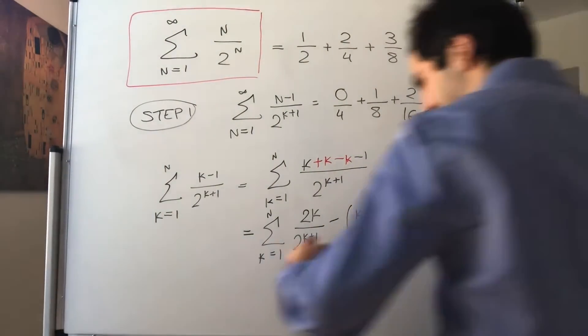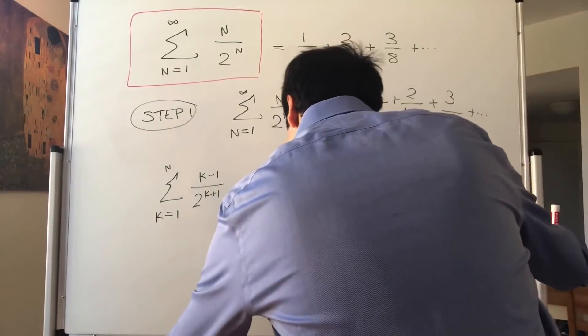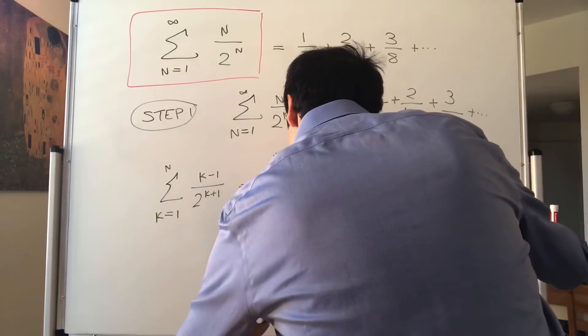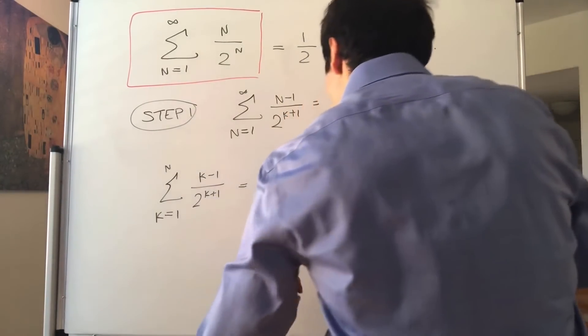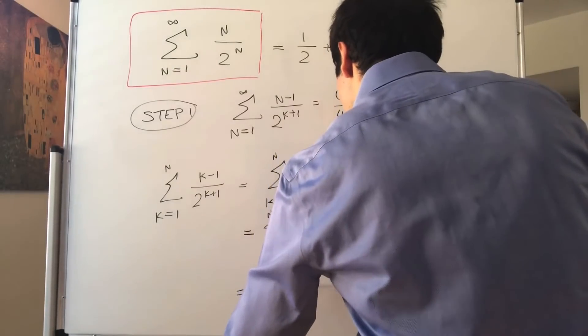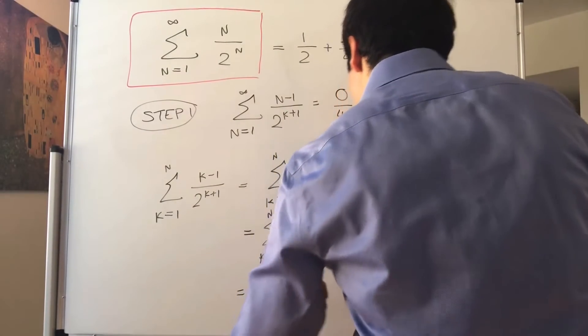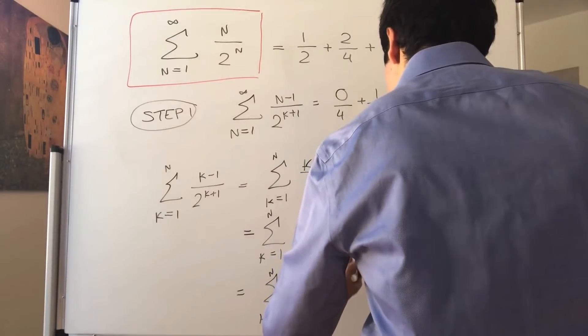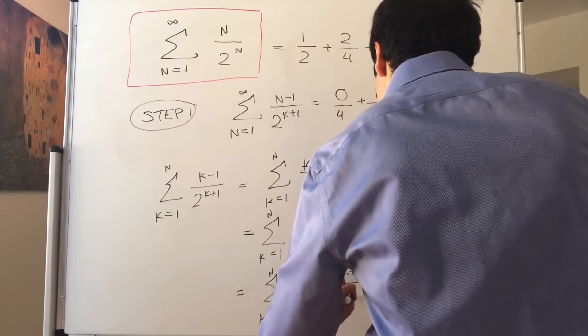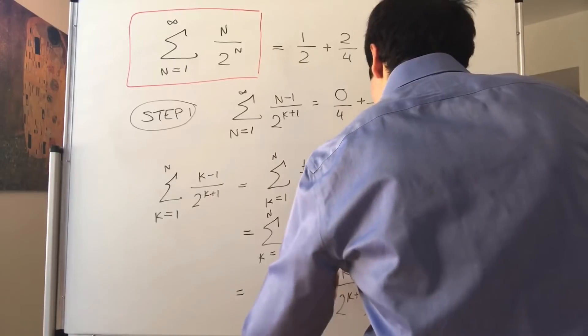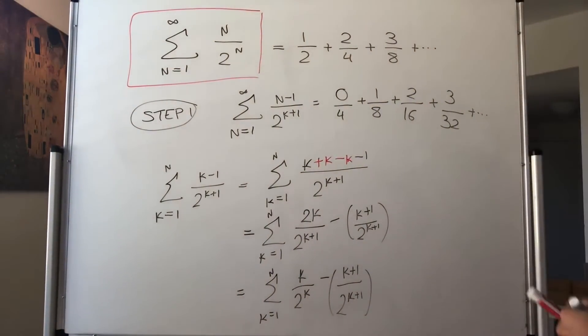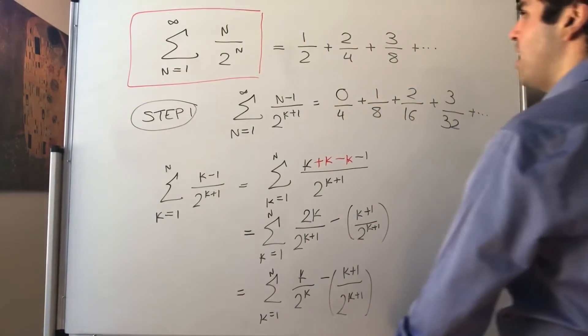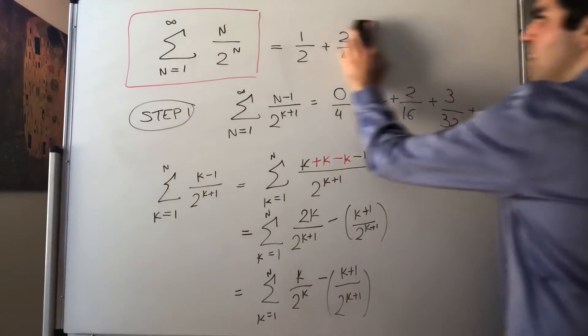Okay, and then this simplifies to the sum from k equals 1 to n of k over 2 to the k minus k plus 1 over 2 to the k plus 1. Okay, that doesn't look very interesting, but then let's just write the first couple of values of that sum.